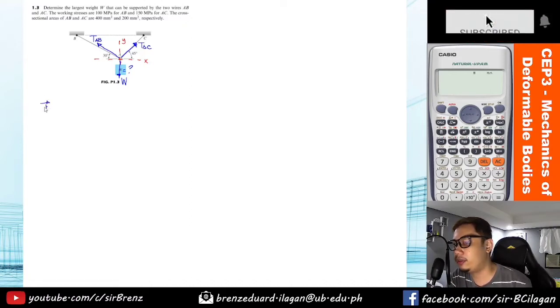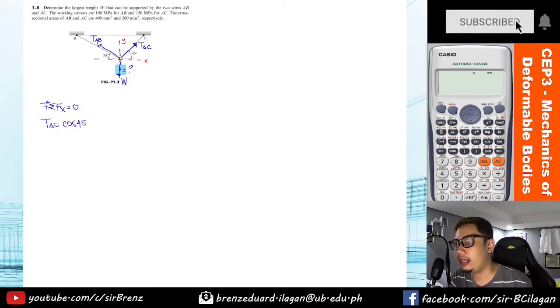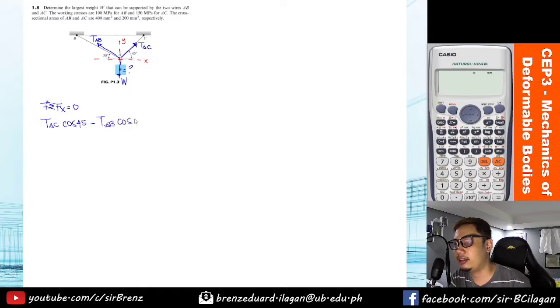AC will be our control direction, assuming all to the right forces as positive. Take summation of forces x equals zero. So we have TAC times cosine 45, then minus since the x component of AB is going to the left, so minus TAB cosine 30 equals zero. This will be our equation number one.